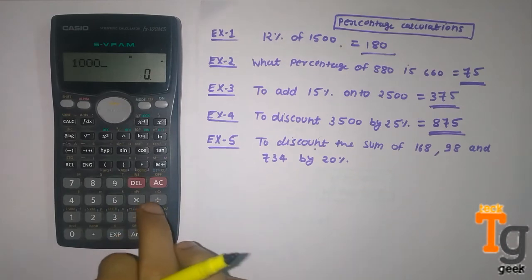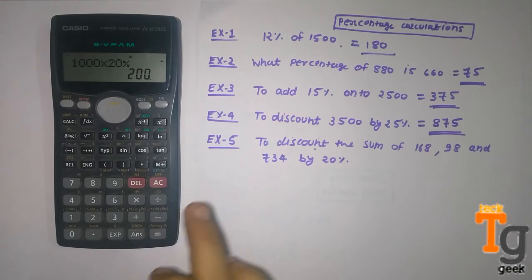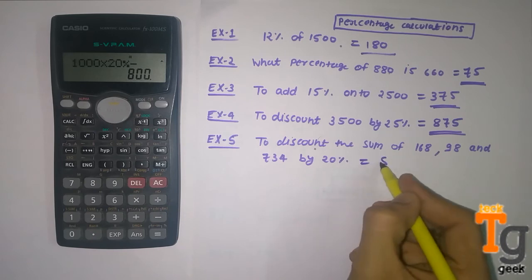And what we have to do: first of all we add all the numbers, then times 20 percent, then minus, and it will give you the answer 800.